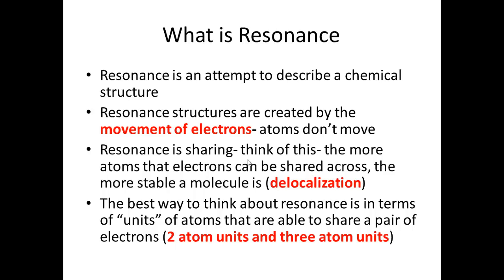Resonance is an attempt to describe a chemical structure. In the book you see a single structure, but that single structure is what's known as a resonance hybrid — a combination of all the resonance structures that a particular molecule can form. Resonance structures are created by the movement of electrons; atoms don't move. There are only two ways to move electrons: resonance moves physical electrons, and induction moves electron density. Jot that down.